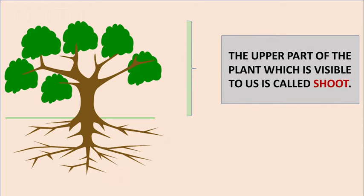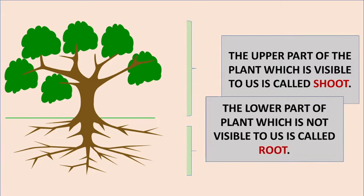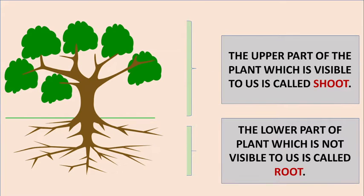The upper part of the plant which is visible to us is called shoot. The lower part of the plant which is not visible to us is called root.